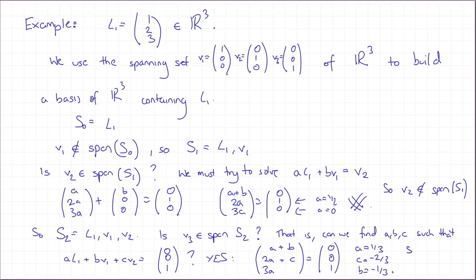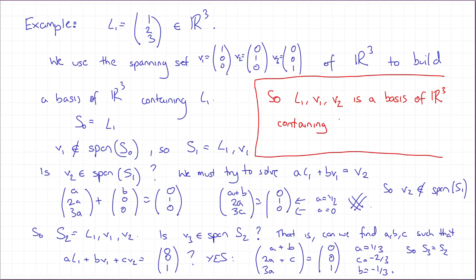So we don't add V3 to our sequence. So S3 is going to be the same as S2. Conclusion: we stop because we've dealt with every single element of our spanning set. And what we get to conclude is that L1, then V1, then V2 is a basis of R cubed containing L. And we're done.